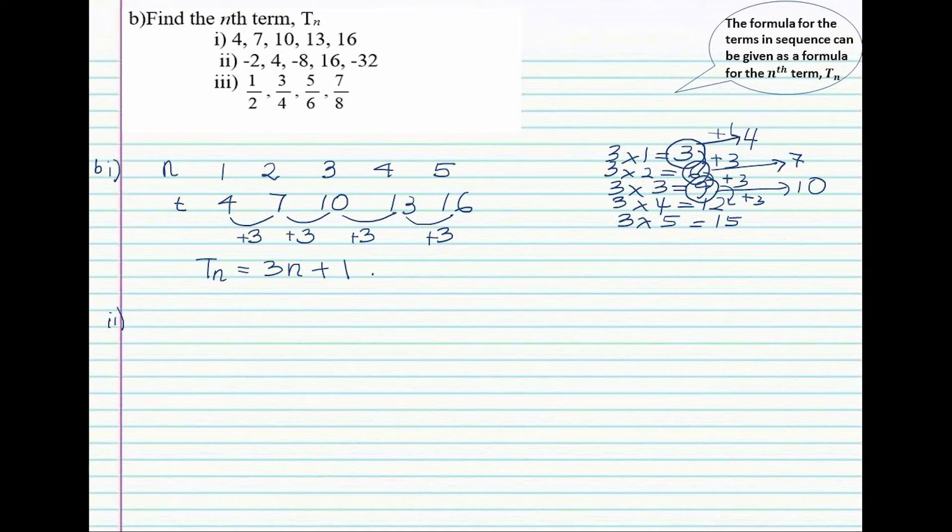Let's list down all the terms and the number of them. First, second, third, fourth, fifth. The first term is negative 2, second term is 4, third term is negative 8, fourth term is 16, and the last term negative 32.